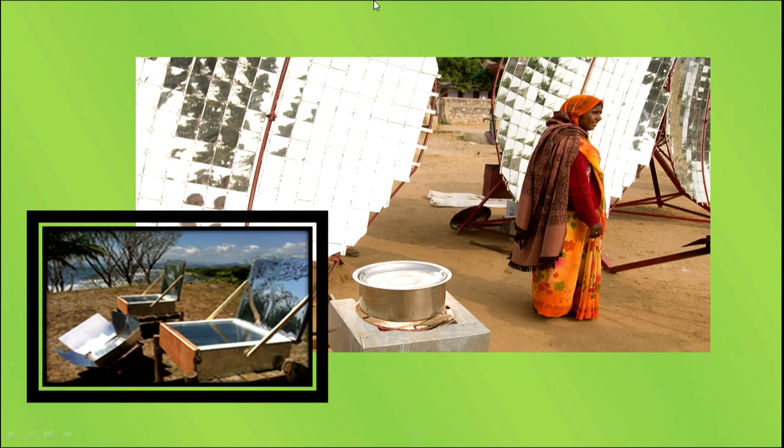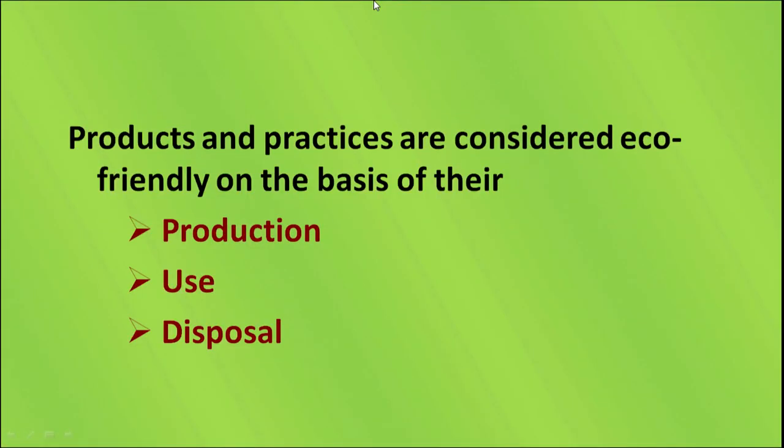So what is eco-friendly? Products and practices which do not degrade the environment are eco-friendly products. Another term used for eco-friendly is bio-friendly. Here is a picture of a solar cooker which uses a renewable source of energy — sunlight — for daily cooking. This is a form of an eco-friendly practice. Products and practices are considered eco-friendly on the basis of their production, use, and disposal.